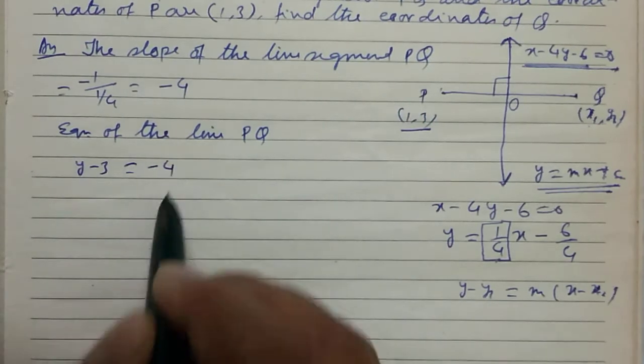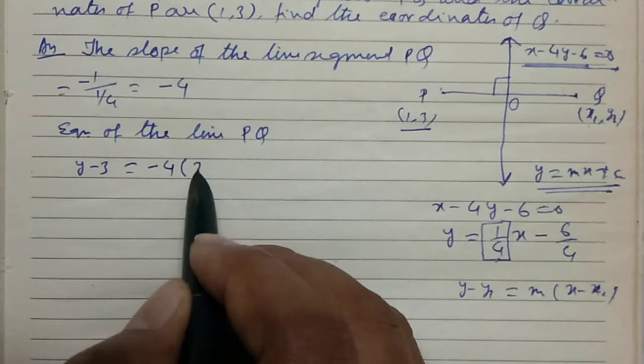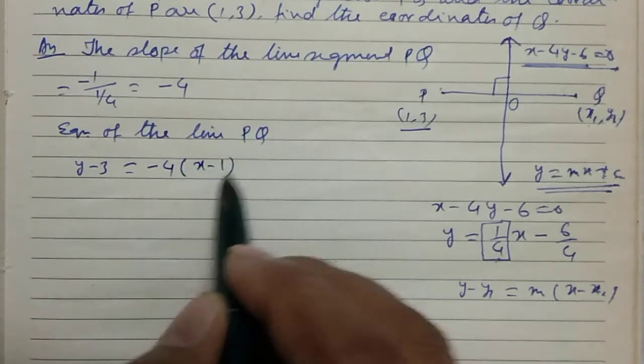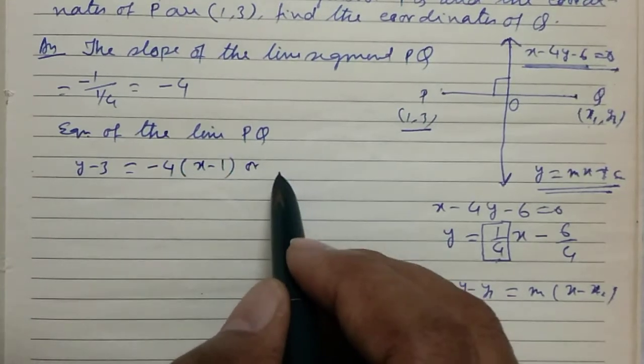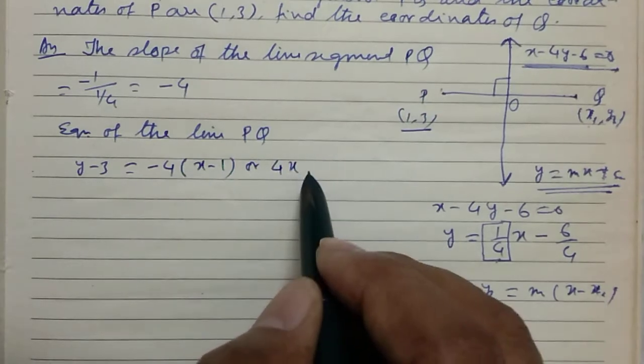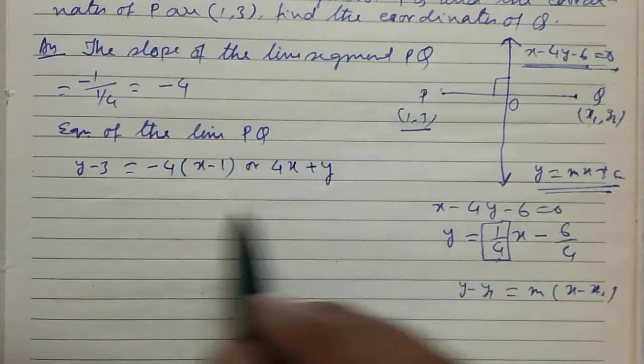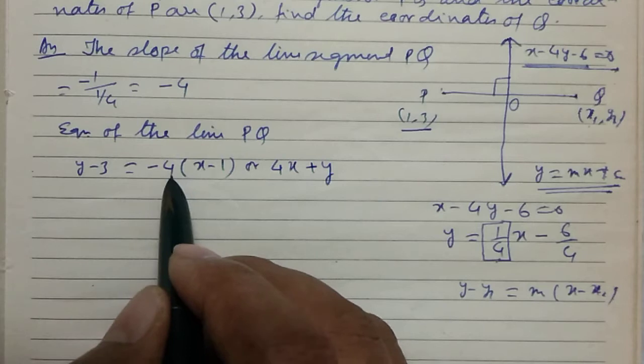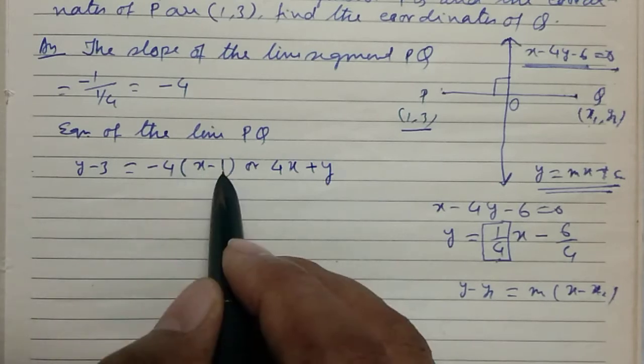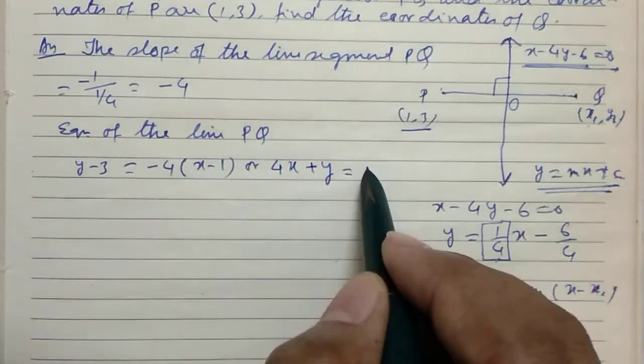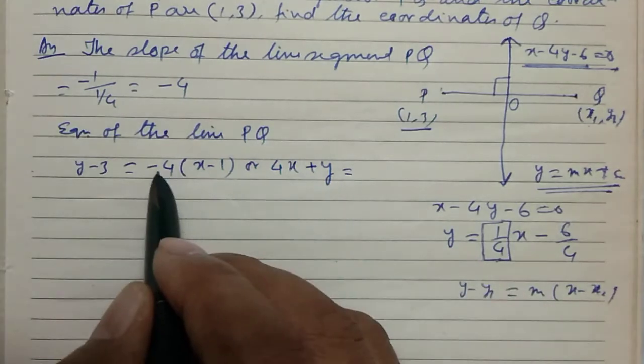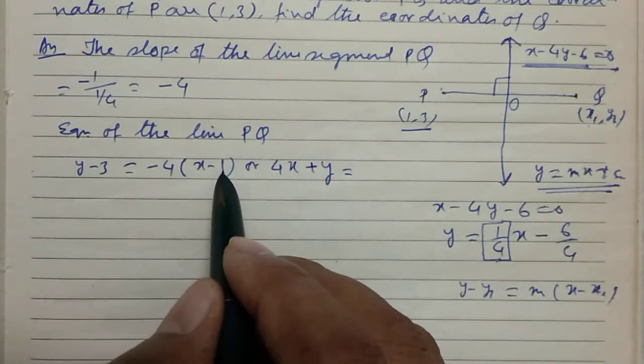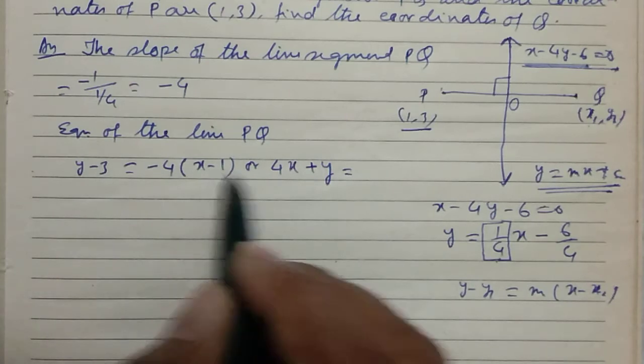y minus y1, which is 3, equals m, and m means minus 4, so minus 4 into x minus x1. Or 4x plus y equals minus 4 plus 3.